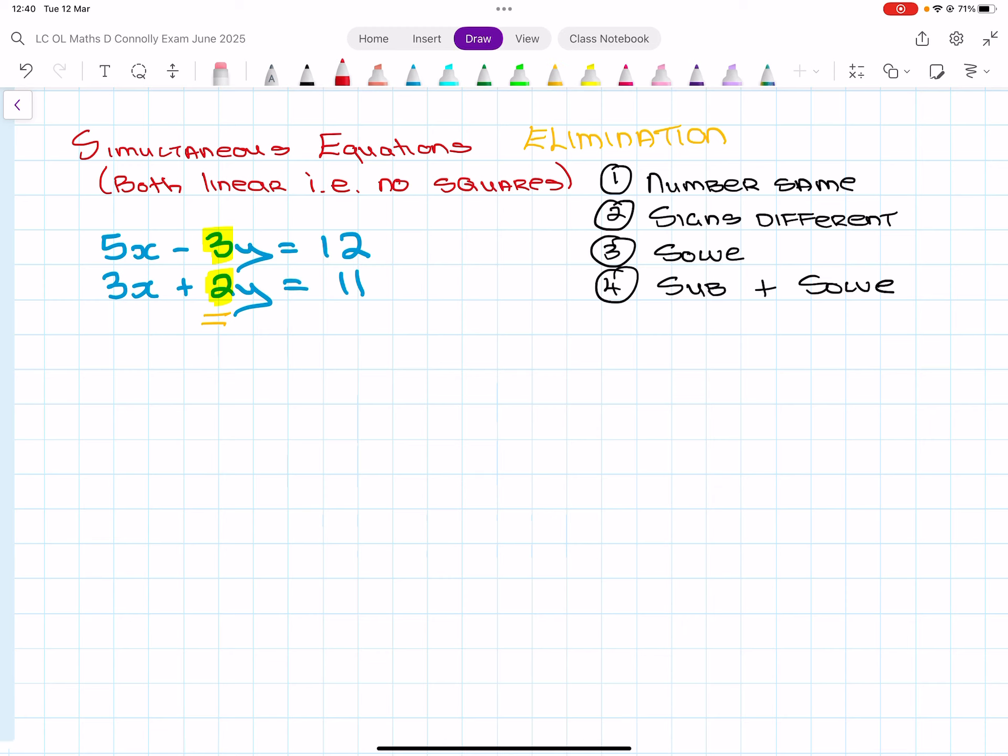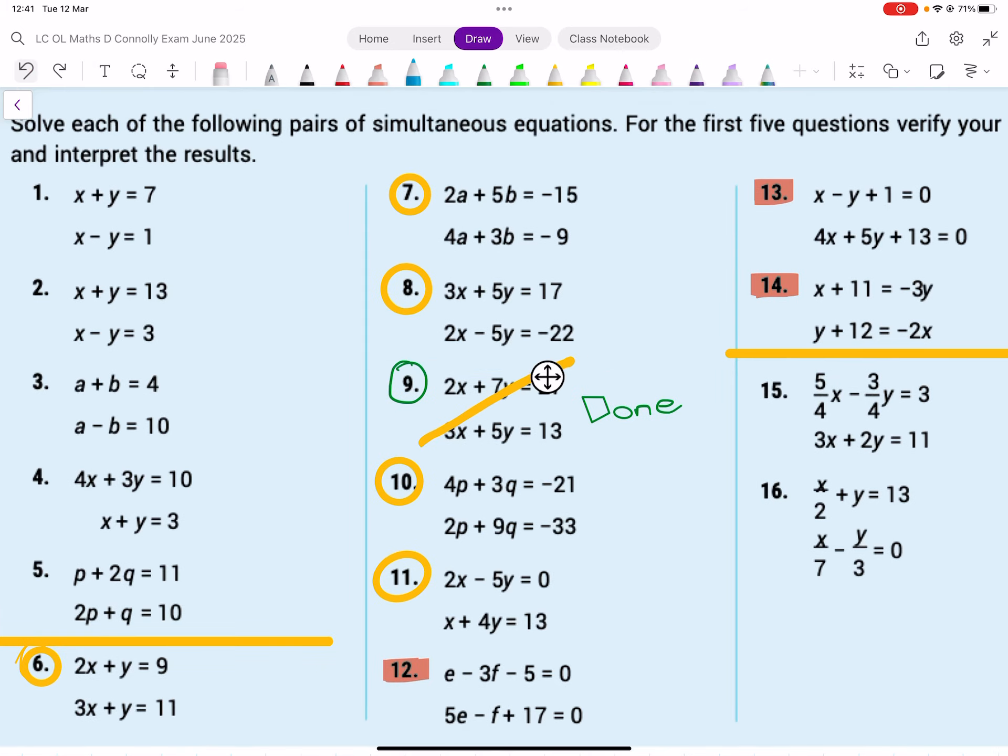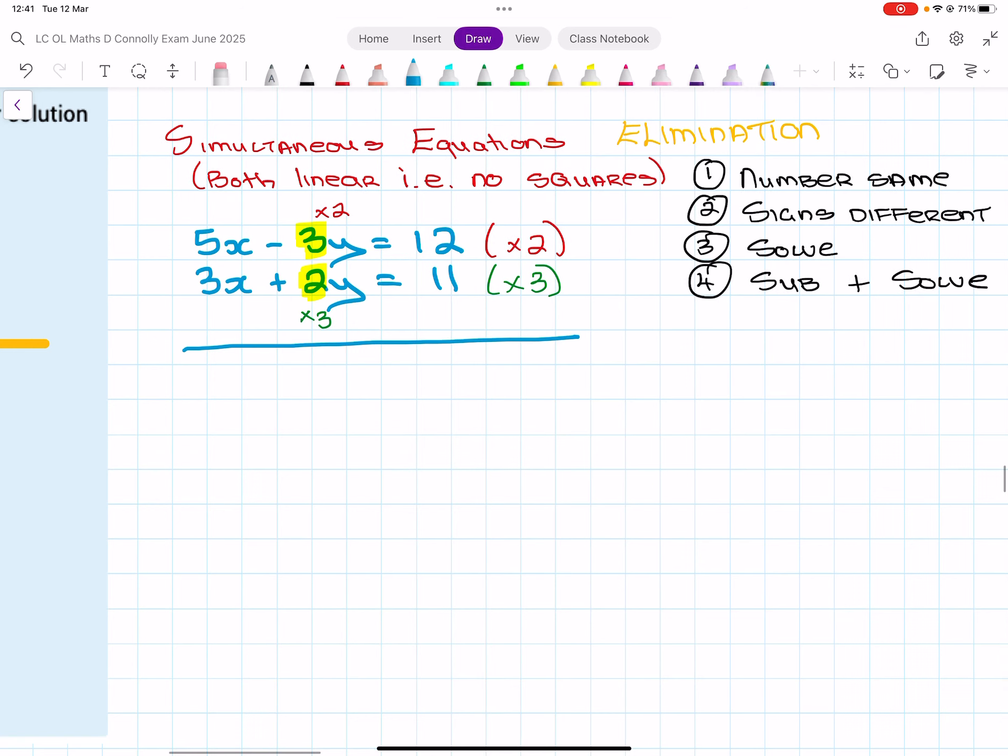Okay, so I'm going to multiply this by two because that will make it a six. But if I want to do that, I have to multiply the entire top line by two. And then I'm going to multiply this by three, because again that will give me the six. But if I want to do that, I have to do the whole line by three. So the entire top line by two gives me 10x minus 6y equals 24. And the bottom line, that entire bottom line by three gives me 9x plus 6y equals 33.